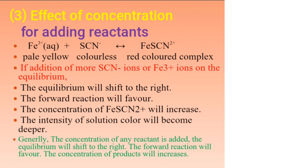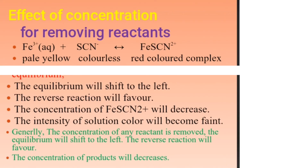Generally, if we increase the concentration of a reactant, the equilibrium shifts to the right. If we remove a product, the equilibrium shifts to the left and the reverse reaction is favored, causing the concentration of Fe(SCN)₂⁺ to decrease.